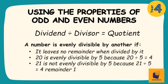The last term we need to be familiar with is evenly divisible. A number is evenly divisible by another if it leaves no remainder when we divide by it. For example, 20 is evenly divisible by 5 because 20 divided by 5 gives us an answer without a remainder — in this case, 4.